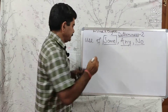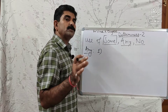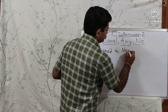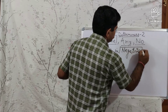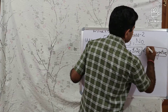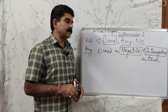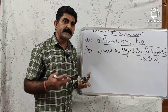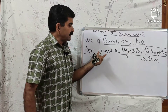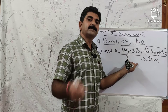Then we have the use of ANY. The common point is that ANY is used with both countable and uncountable nouns. Then, ANY is used in negative and interrogative sentences — this is the key difference from SOME.